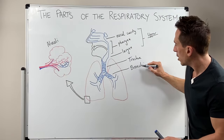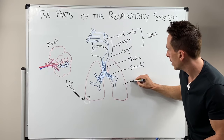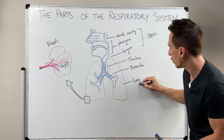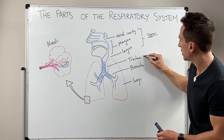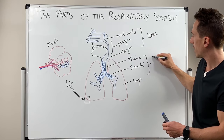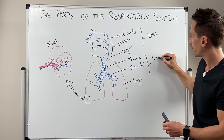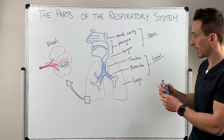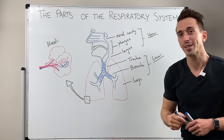The trachea, bronchi, and the lungs — which include the alveoli — this is the lower respiratory tract. Again, very important clinically.